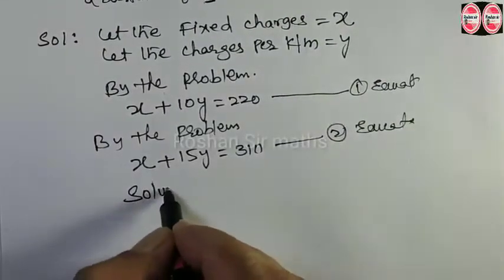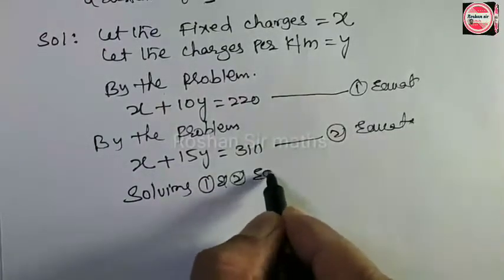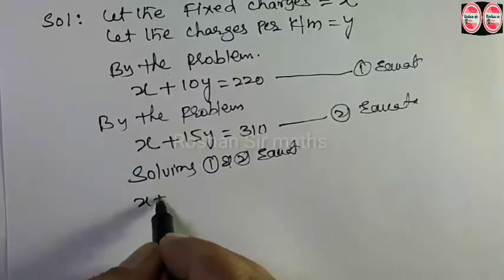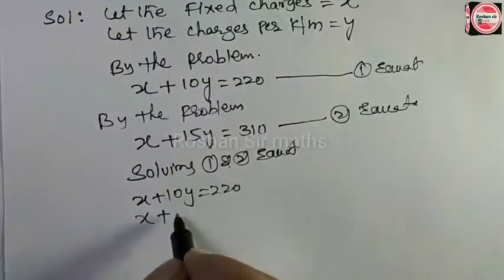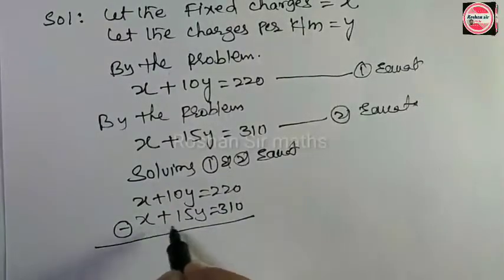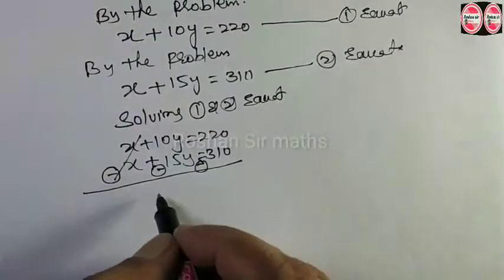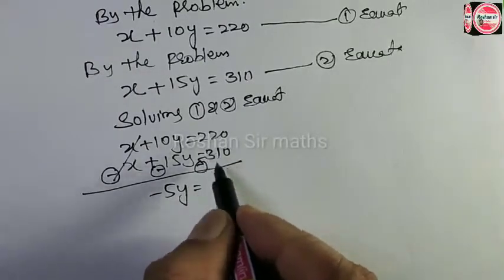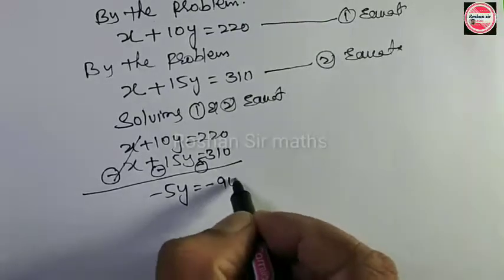Ab isko solving karenge. In dono equations ko subtract karenge. Yahan par sign change kar denge — yeh minus ho jayega. Dono x cancel ho jayenge. Yahan par in dono ko minus karenge: 5y bacha. 220 minus 310 karenge to answer aayega minus 90.